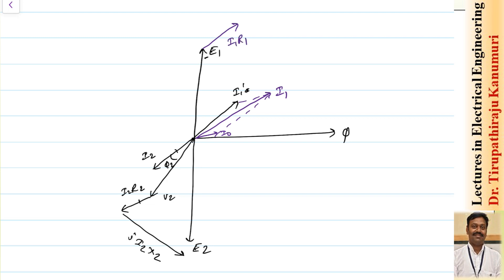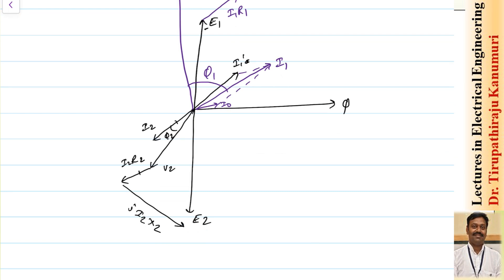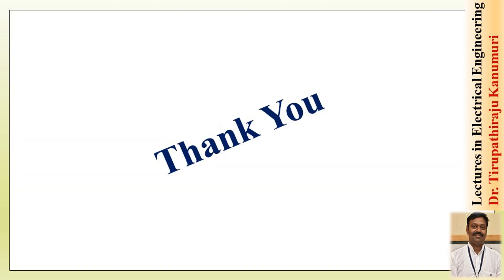The value of E1 is represented with a negative sign. Because of I1, adding the drops -E1, I1R1, and j·I1X1 gives the supply voltage V1. The angle between V1 and I1 is the primary power factor angle. This is the exact phasor diagram for a lagging power factor load; similar diagrams apply for unity and leading power factor. Next class will solve a numerical covering all these concepts completely. Any queries can be left in the comments below.